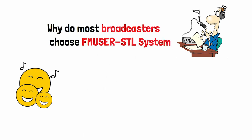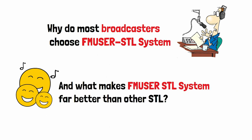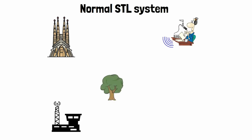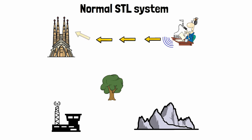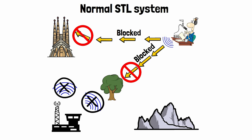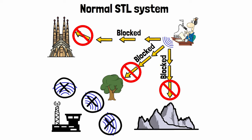Why do most broadcasters choose the FM User STL system? What makes it far better than other STL systems? Traditionally, a normal STL sends a radio station's audio signals from the broadcast studio to a radio transmitter in another location. However, there are many disadvantages. For example, after a broadcasting station has successfully built the transmitter, the middle part of the transmission may be blocked by tower buildings, trees, and mountains, causing transmission failure.